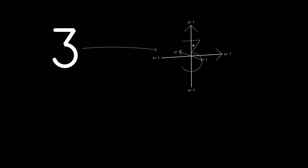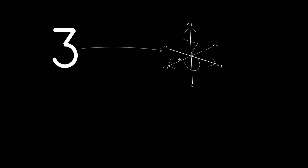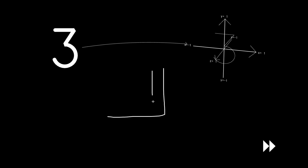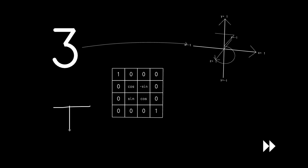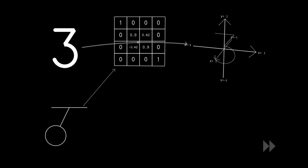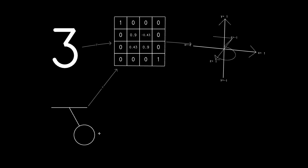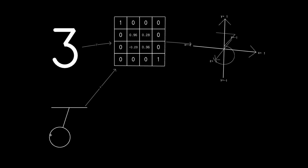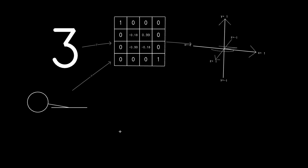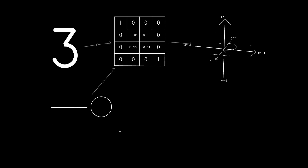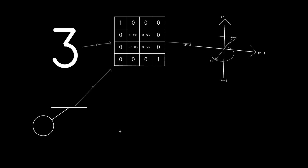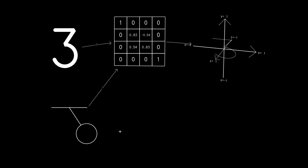By focusing on enabling exploration and improvisation in real-time presentations and performances, atypical offers a novel take on what a type system can be, and is an important addition to the interactive visual language of Chalk Talk.